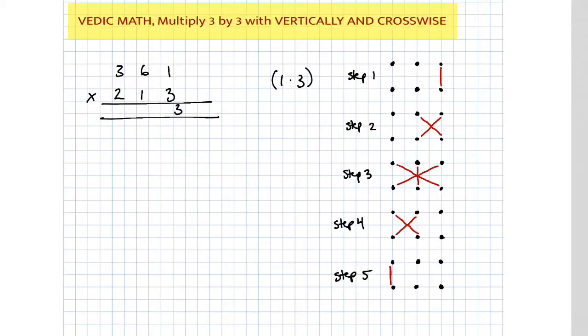Step number 2, here we have a crosswise, so it makes an x. So what we're saying is 6 times 3 plus 1 times 1. I just want to say 6 times 3 plus 1 times 1. So we know 6 times 3 is 18, 1 times 1 is 1, 18 and 1 makes 19. So we write it in like so.